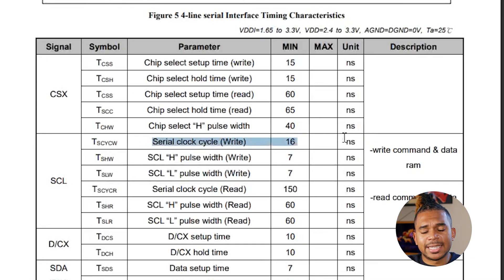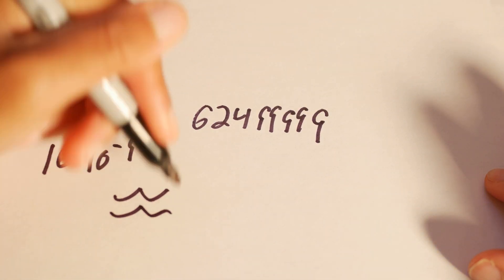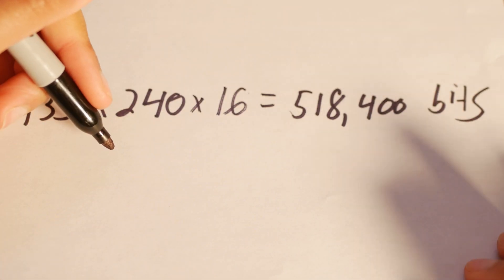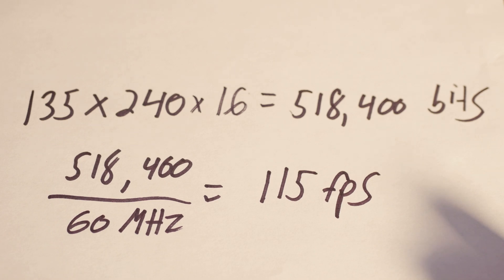Sticking with SPI isn't going to hinder this project much. Looking at the datasheet for this display, the cycle write time is 16 nanoseconds, which means the SPI driver can handle speeds of up to about 60 MHz. At a resolution of 135 by 240 with each pixel taking up 16 bits, we have a total of 518,400 bits to send per frame. At 60 MHz, we could theoretically attain about 115 frames per second.